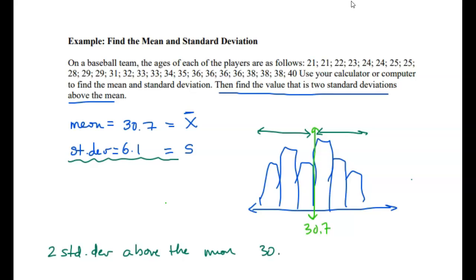Then we take the mean, which is 30.7, and we add two times 6.1, two times the standard deviation. So we get 30.7 plus 12.2, and that gives me 42.9.